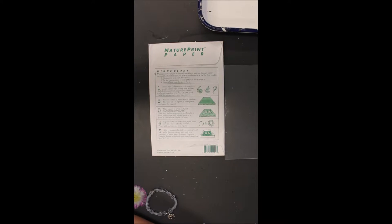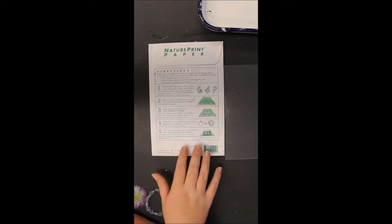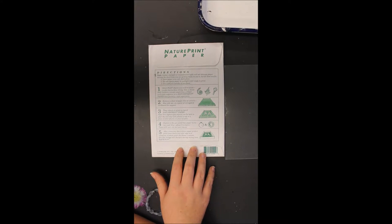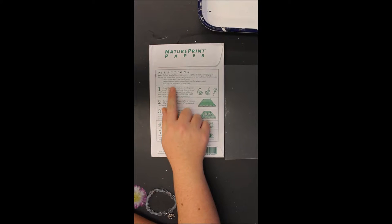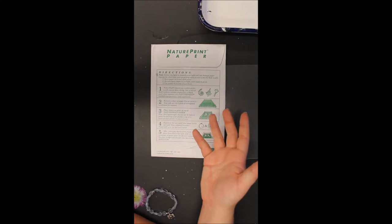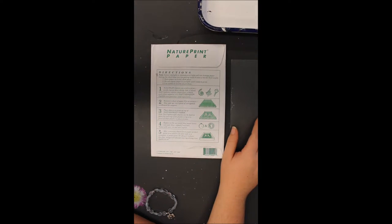So what we're going to do is learn how to make our own basically our own cyanotype. We're not going to use harsh chemicals like they might have, but the idea is the same. This is called a nature print using our nature print paper. The paper that I'm using is leftover from last year, so we'll see how it turns out. It says use within six months of purchase, so it may not expose properly according to directions, but I'm going to show you the correct directions.